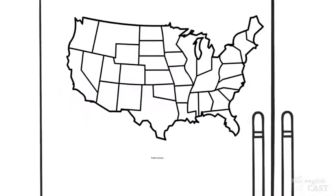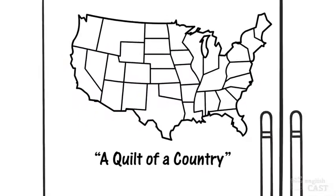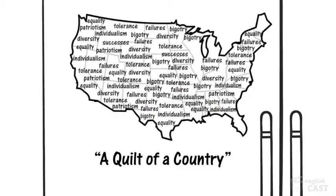In A Quilt of a Country, Quinlan's purpose is to show the complexity of American society in a way that makes it human and personal. The ideas she communicates are like different ingredients that support her purpose, including the ideas that oppose or seem to contradict each other.